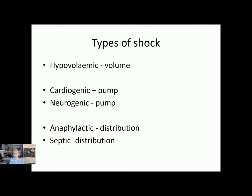There are different types of shock. The most common one we come across in maternity is hypovolemic — that lack of circulating volume — which is a volume issue, covering things such as postpartum haemorrhage and antepartum haemorrhage. Then we have cardiogenic and neurogenic shock, which are both pump issues, although neurogenic can be a distribution issue as well. Anaphylactic and septic shock are both distribution issues — where that volume is being distributed.